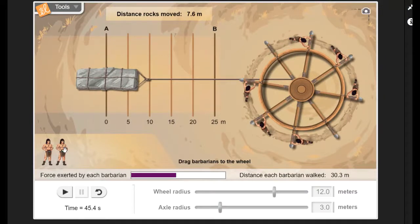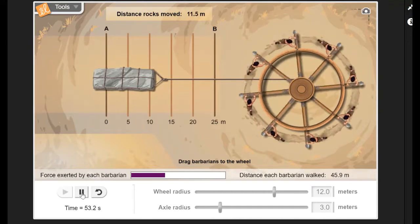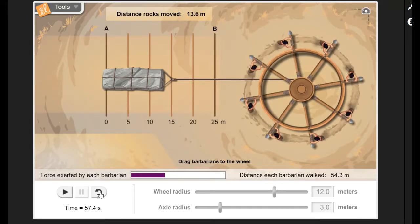What do you think would happen if we put all of them on over here? Well, then probably the effort per barbarian is going to get reduced. And then we can pause it and we can reset it.